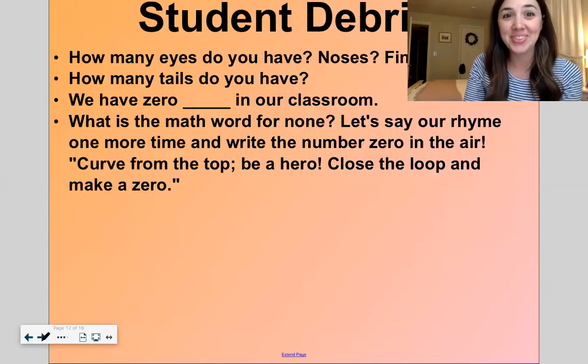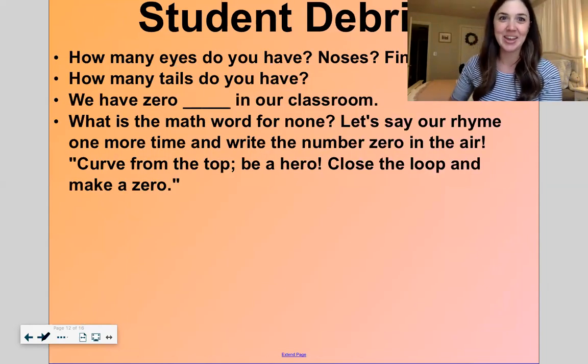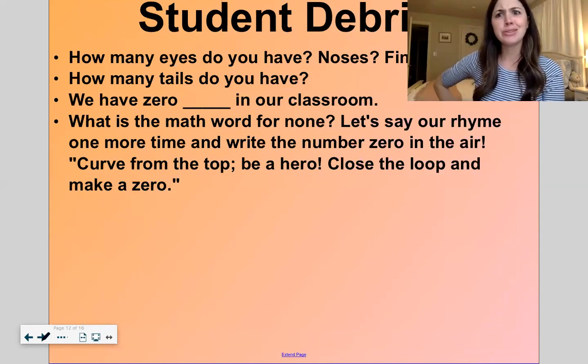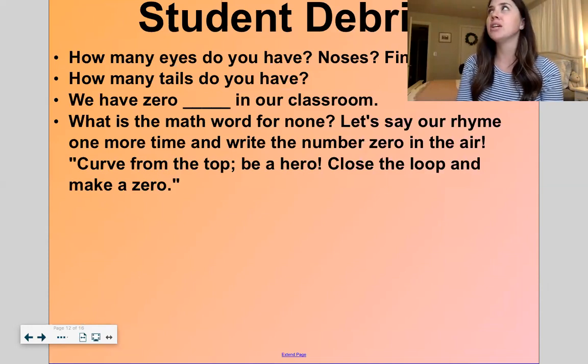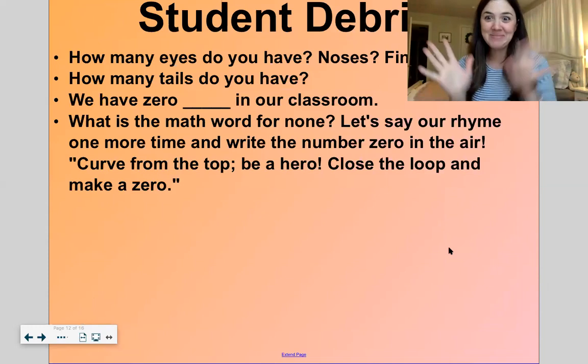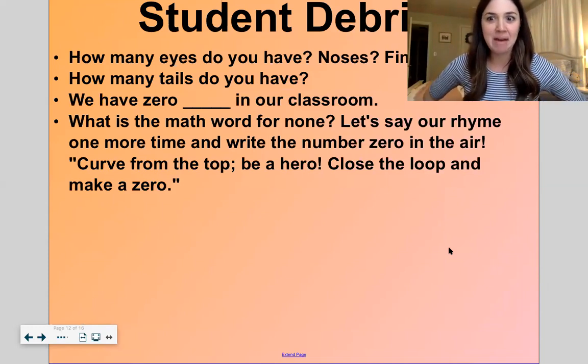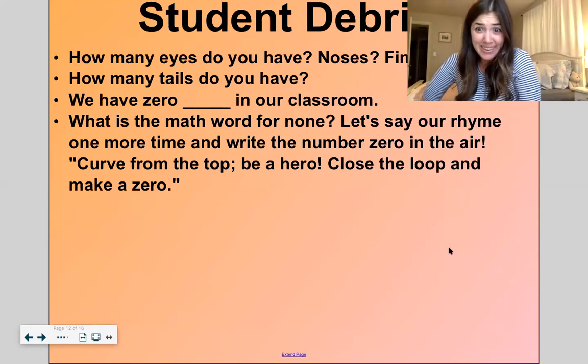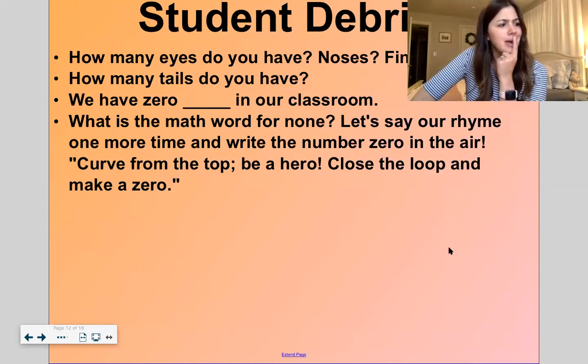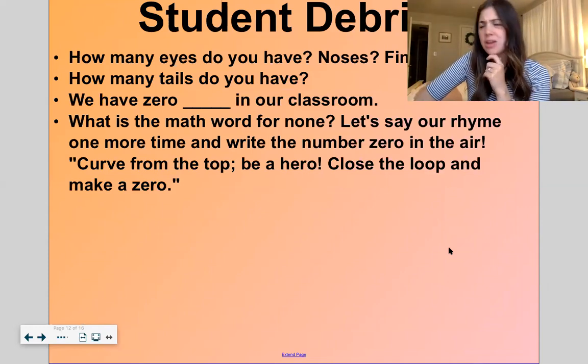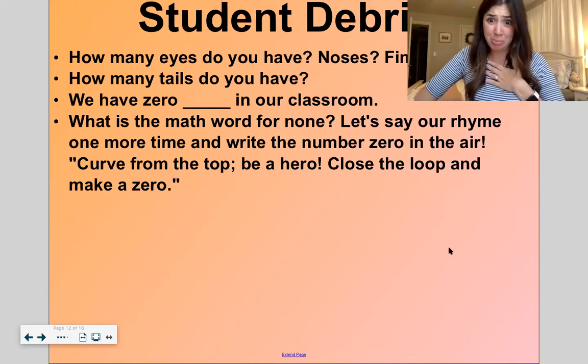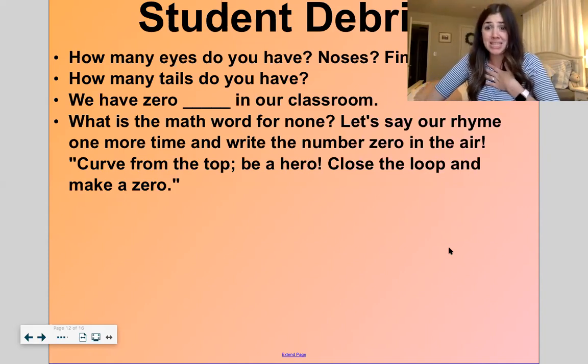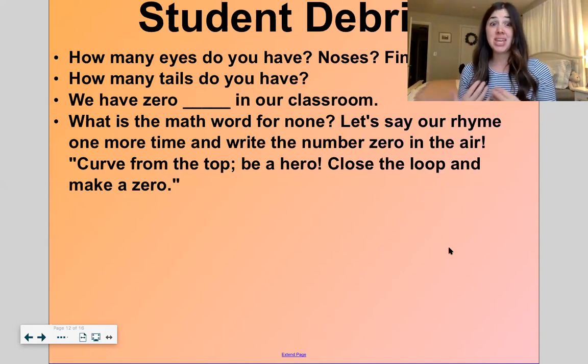All right. Now, I have some silly questions for you before we do our exit ticket. How many eyes do you have? How many noses do you have? Just one. How many fingers do you have? Probably ten. Great. How many tails do you have? Zero. We don't have tails. We're not dogs or cats, right? What do you have zero of in your house? Can you think of anything you have zero of? I have zero pets. I don't have a cat. I don't have a dog or a bird. I don't even have a goldfish. I have zero pets. So the math word for none is zero.